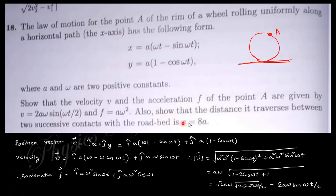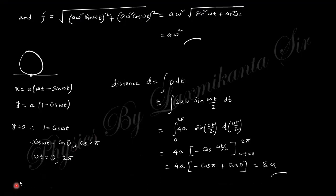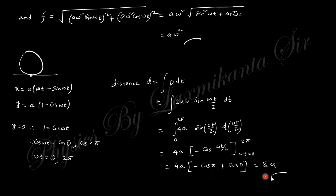To prove distance between successive contacts is 8a: at contact points y = 0, so cosωt = 1, meaning ωt = 0 or 2π for successive contacts. The distance s = ∫v dt, converting to ωt with limits 0 to 2π, which yields s = 8a.